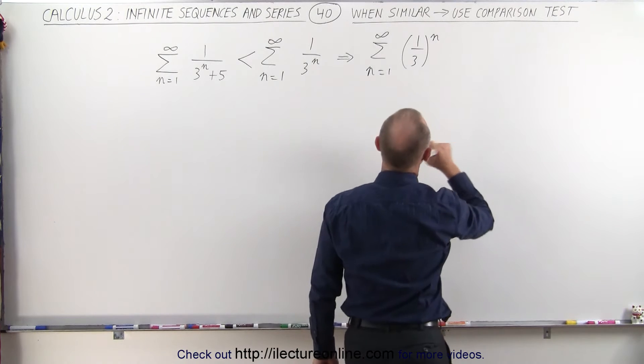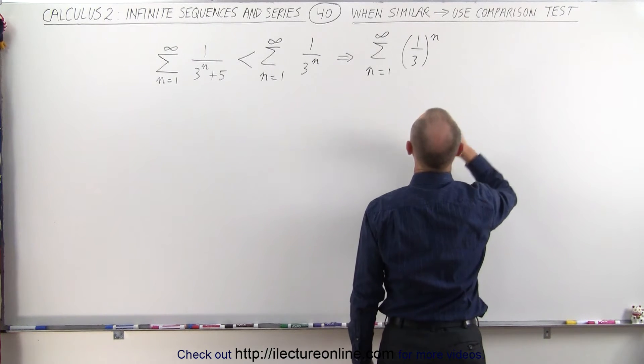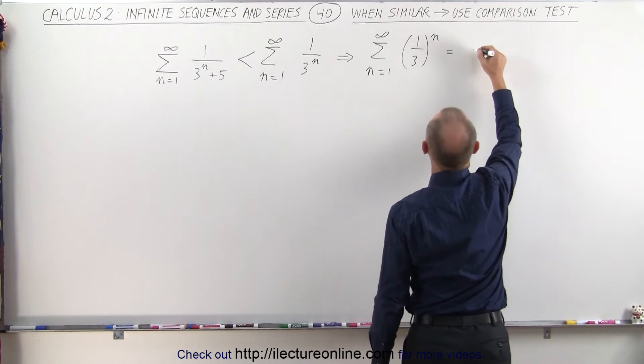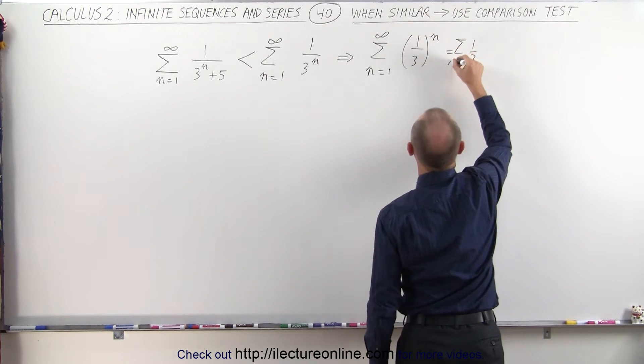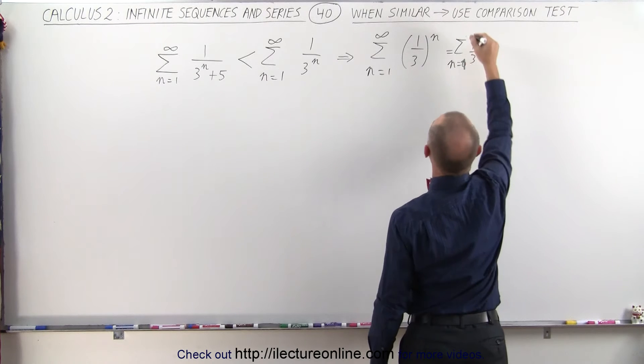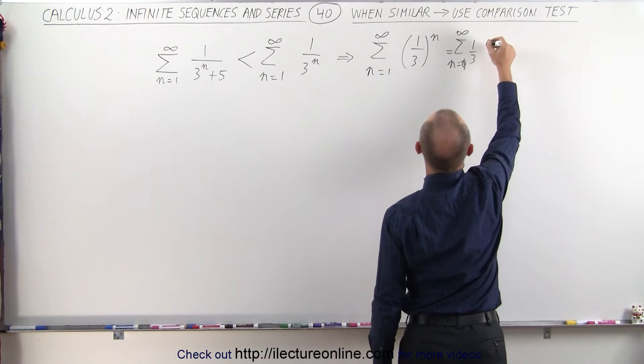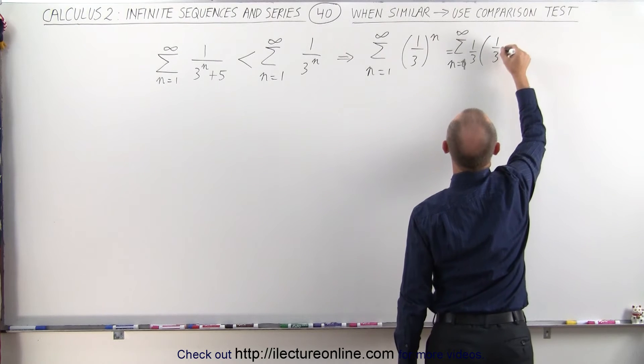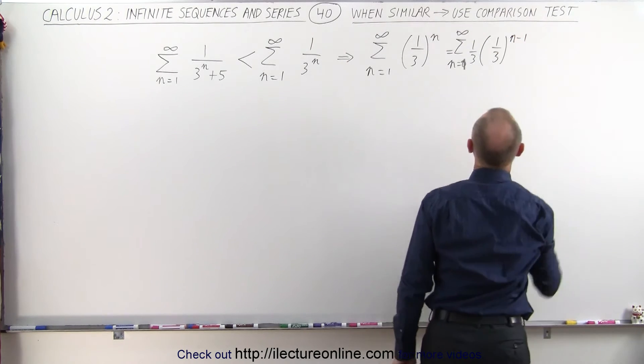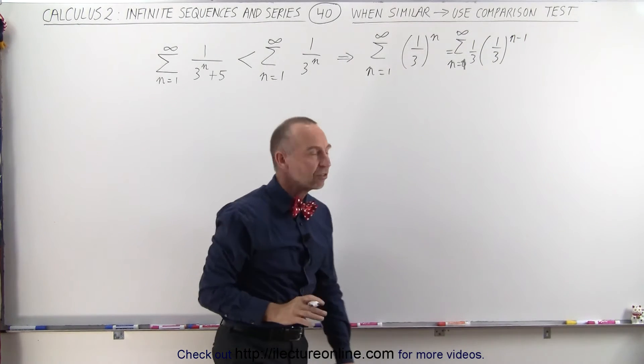Which means we can then factor out 1 third. So this can then be written as the sum of n equals 1 to infinity of 1 third times 1 over 3 to the n minus 1 power, and now we have a geometric series.